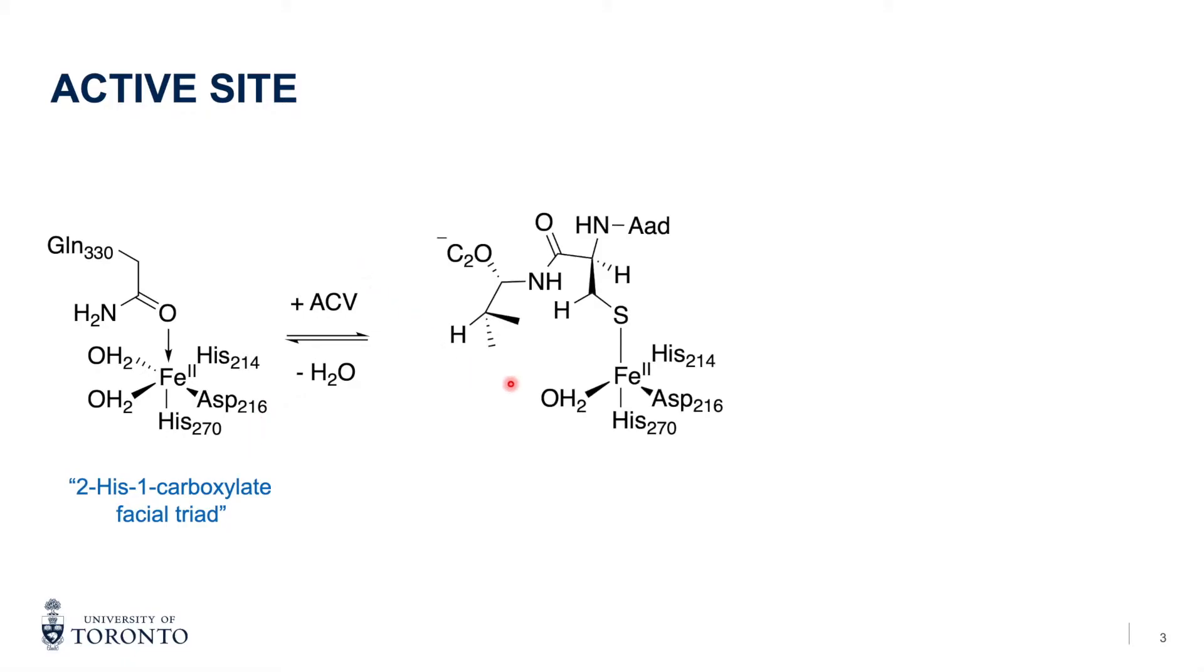When ACV binds, it will replace glutamine and bind the iron through the cysteine sulfur. Since thiolate is a weak-field ligand, the iron becomes high spin and reducing the redox potential to facilitate dioxygen bonding.